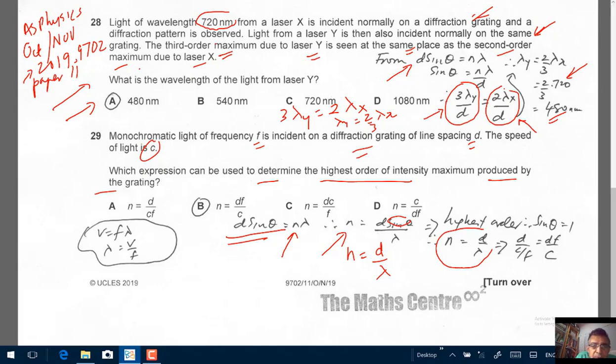And what is lambda? You know the formula V equals to F lambda. So lambda is V over F. In this case, it will be C over F. That's what you see here. Bring the F up and you will get dF over C. Correct response B. N equals to dF over C.